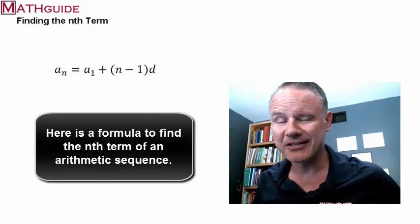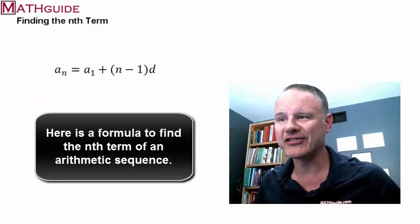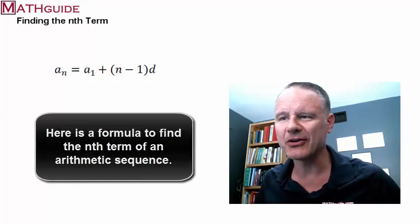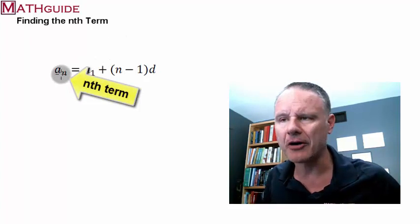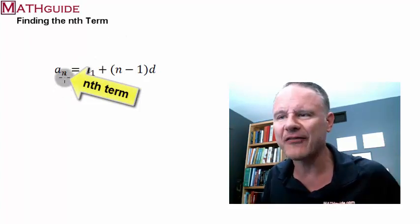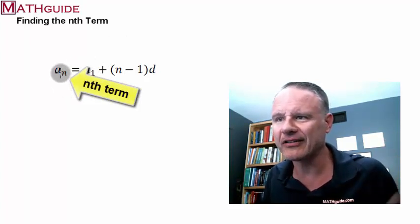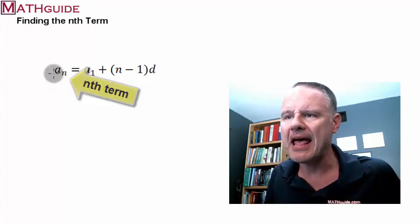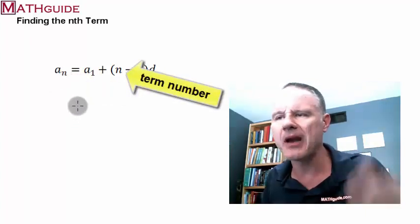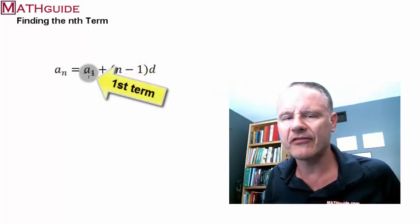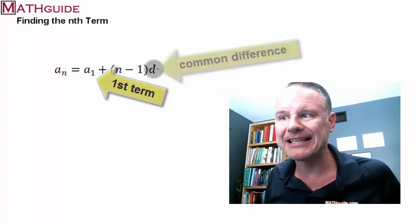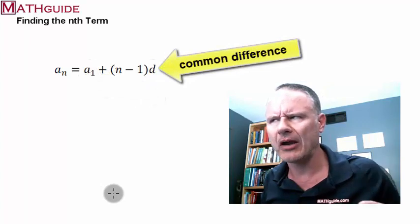So, here's an arithmetic sequence. We have some symbols here. a sub n just means the nth term, whatever term you're looking to find, the 5th, 10th, the 20th, the 7,000th term. N stands for whatever term number it is. a sub 1 is the first term. And d is the common difference. What does that mean?